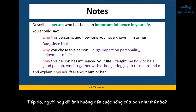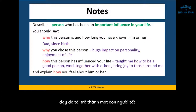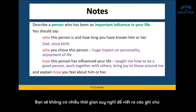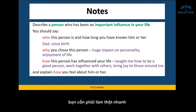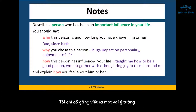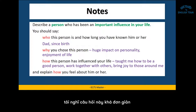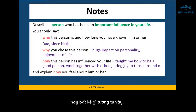For how this person has influenced your life, I wrote: taught me how to be a good person, work together with others, bring joy to those around me. When you're writing notes, you don't have a lot of time, so you need to move quickly and throw down ideas that will help you think of a story during the actual speaking part. And for how you feel about him or her — with your parents, you can probably say you love them, so I didn't bother writing a note for that last part.